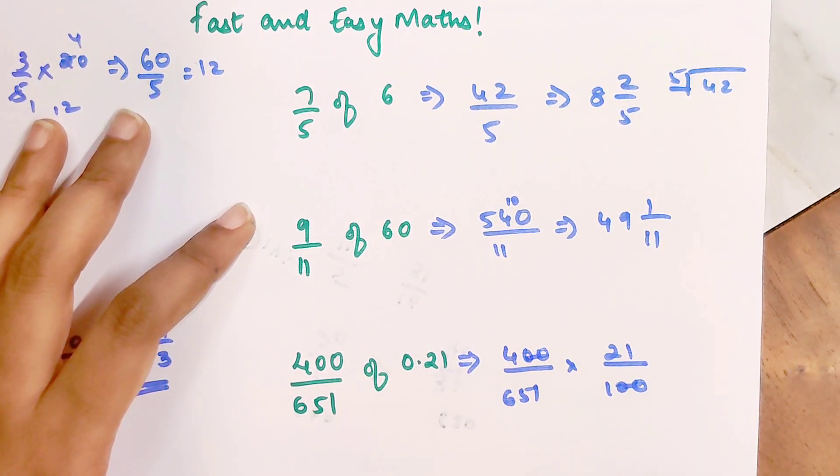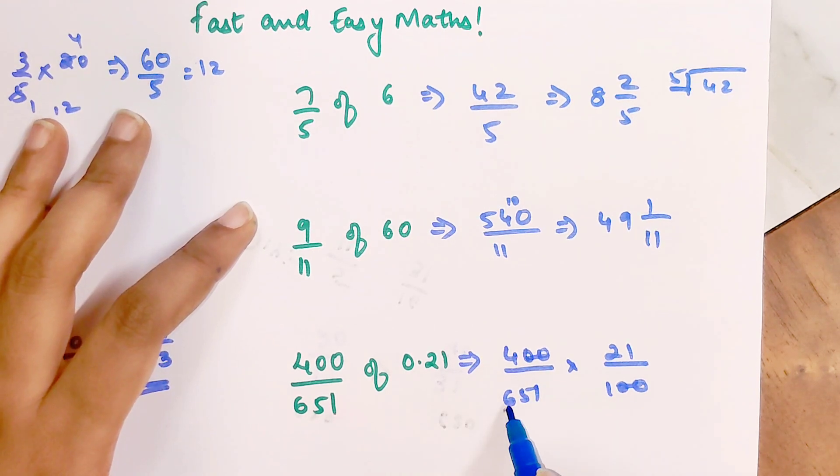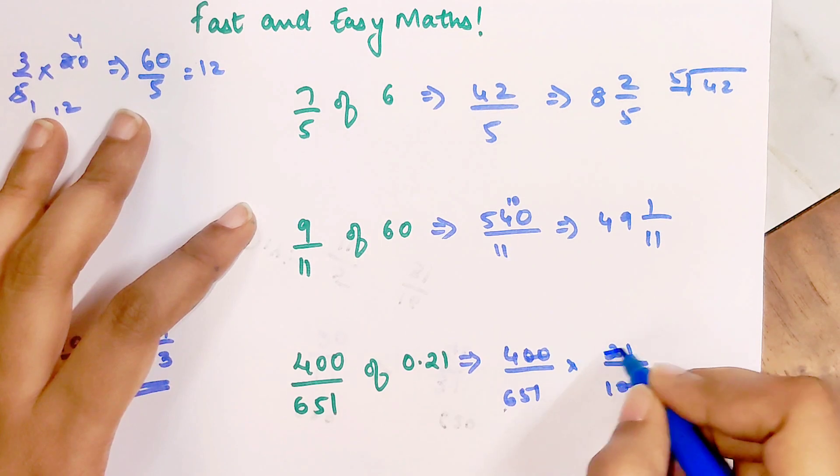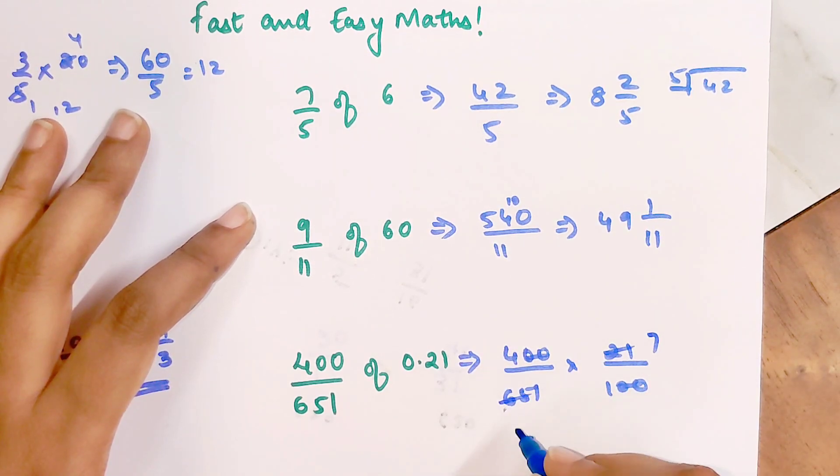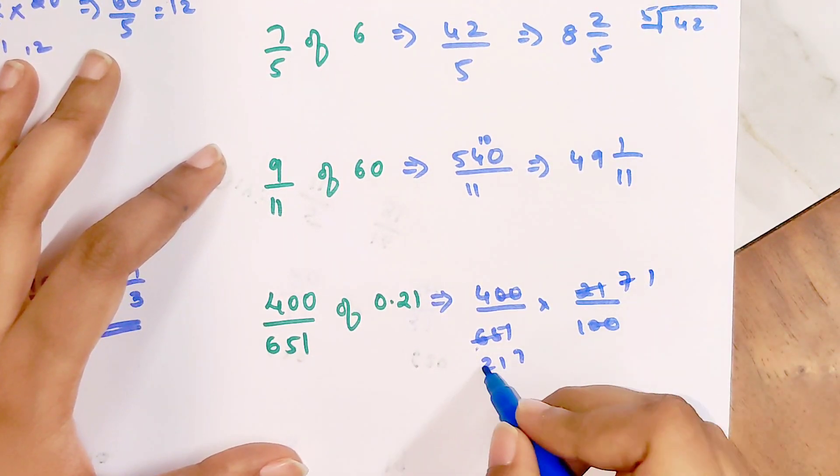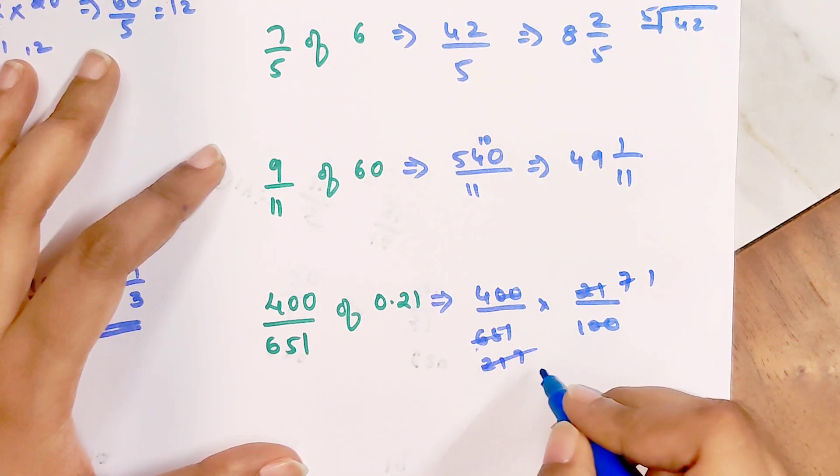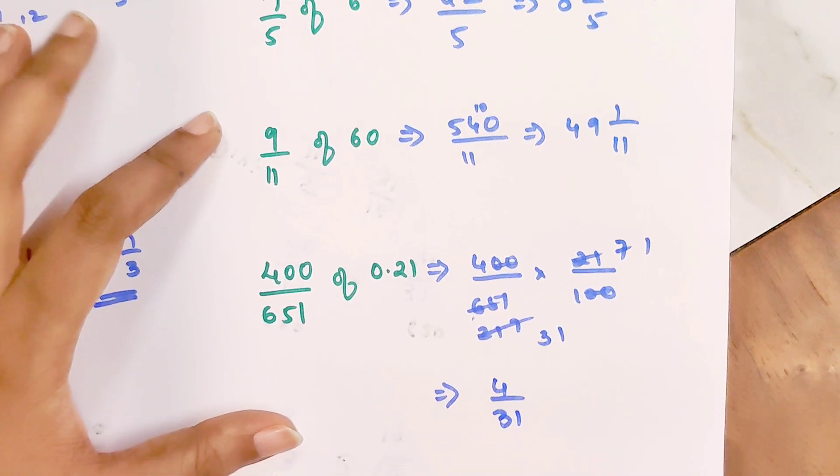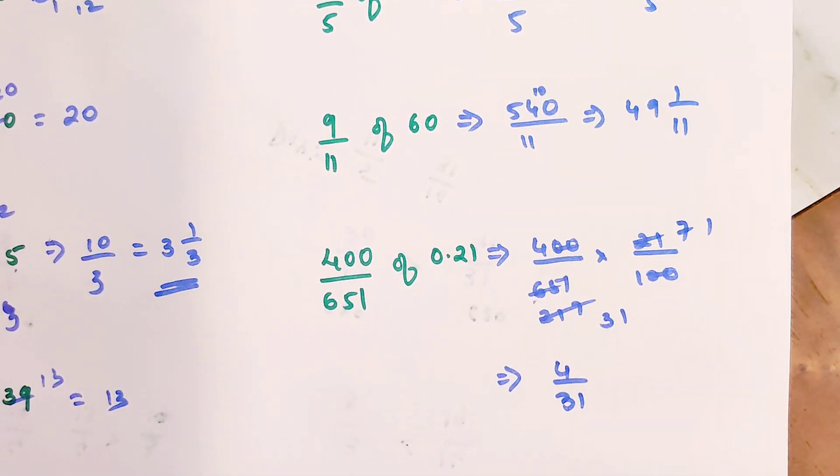We have 400 upon 651 into 21 upon 100. These are getting cancelled. Both are going in the 3 table. This is 7s and 2s, 1s and then again 7s. This also gets cancelled by 7, so I'm left with 3 and 1. My final answer is 4 upon 31. You saw how easy this entire thing became.